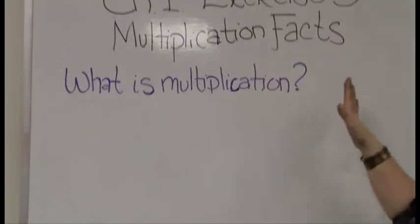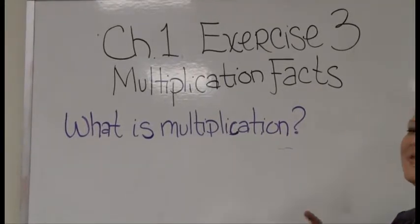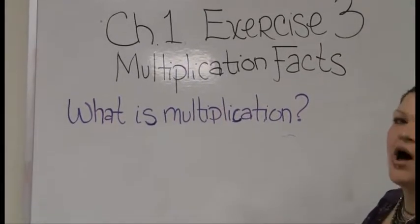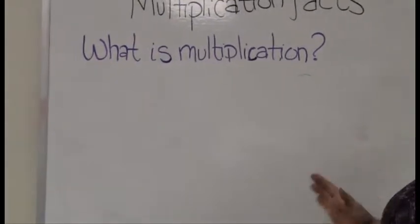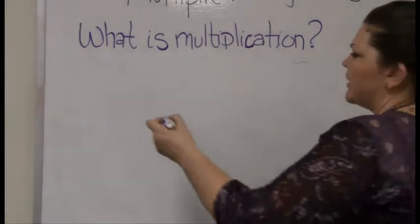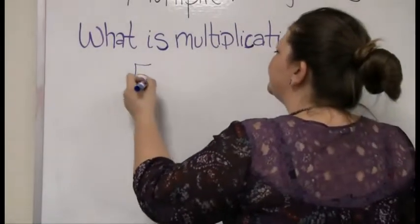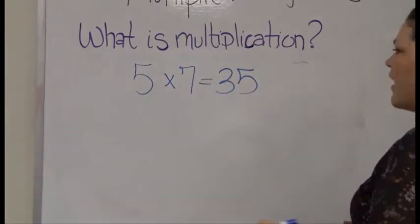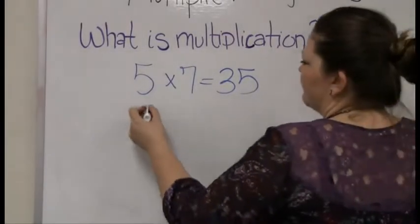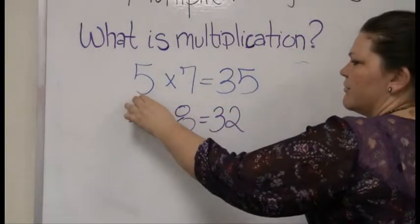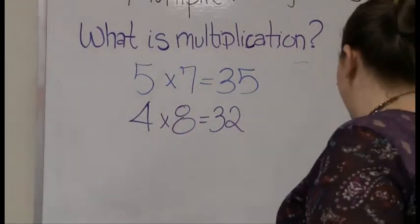In chapter one, exercise three of the GED book, they're going to ask you all to memorize your multiplication facts. This is the same thing every teacher has been asking you to do since probably second or third grade. And I've heard it from a lot of y'all, well, I just can't memorize my multiplication facts. I'm talking about those one-digit facts, like five times seven. A lot of y'all know that's thirty-five. Another example, four times eight. That's thirty-two.